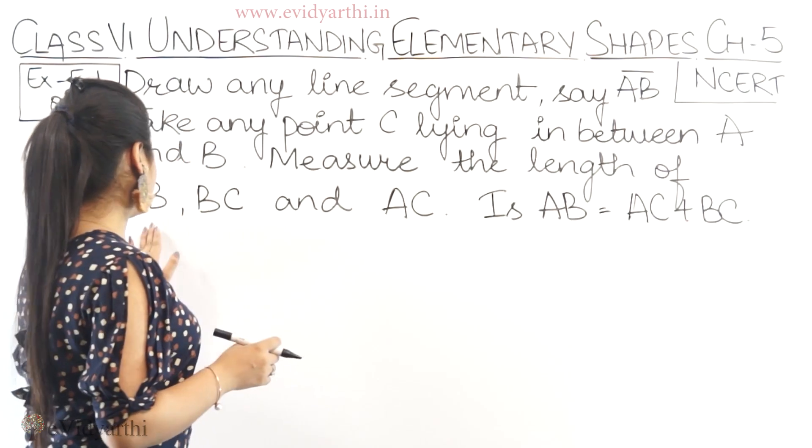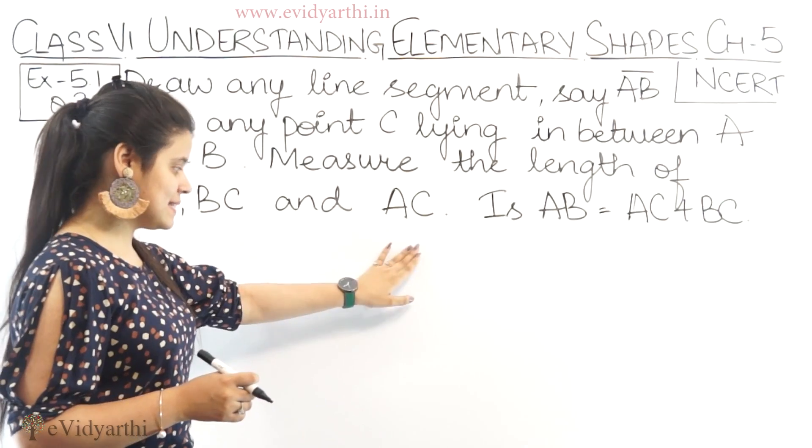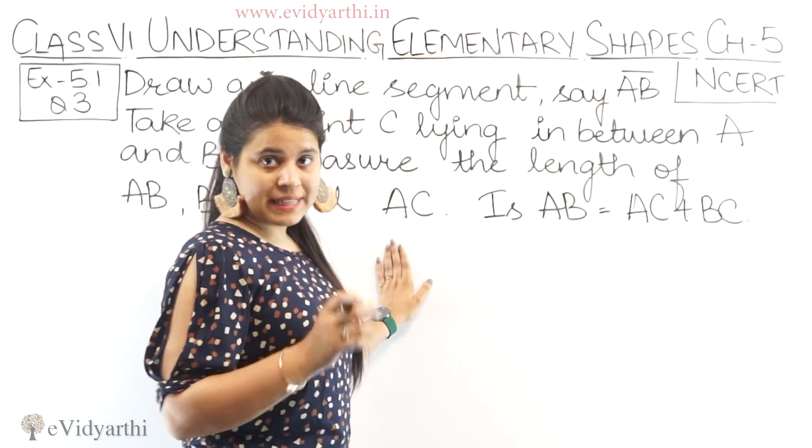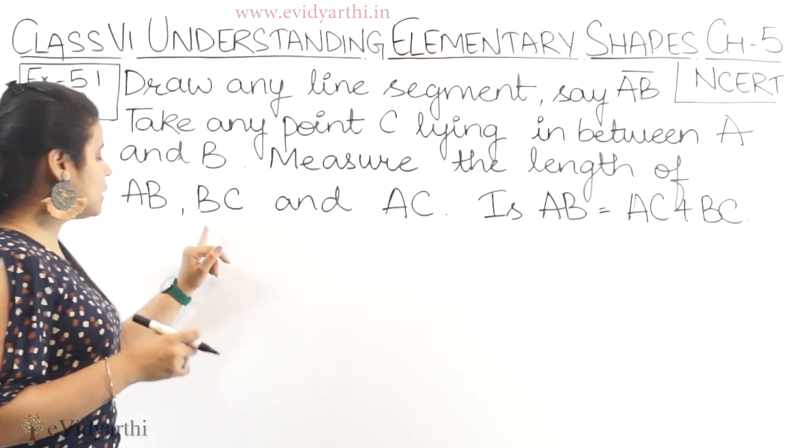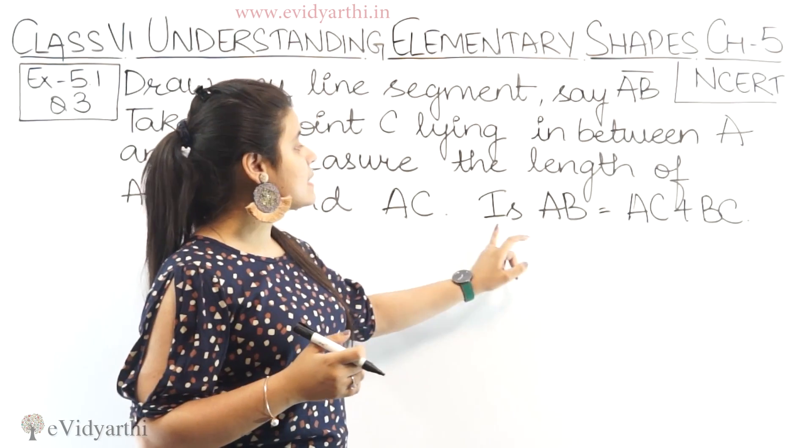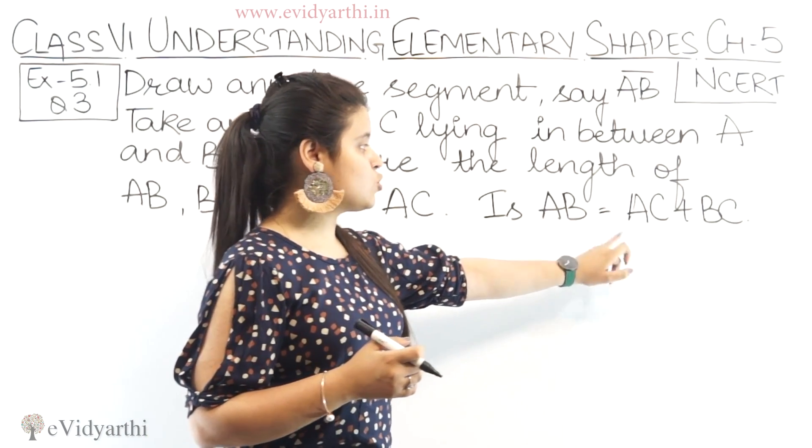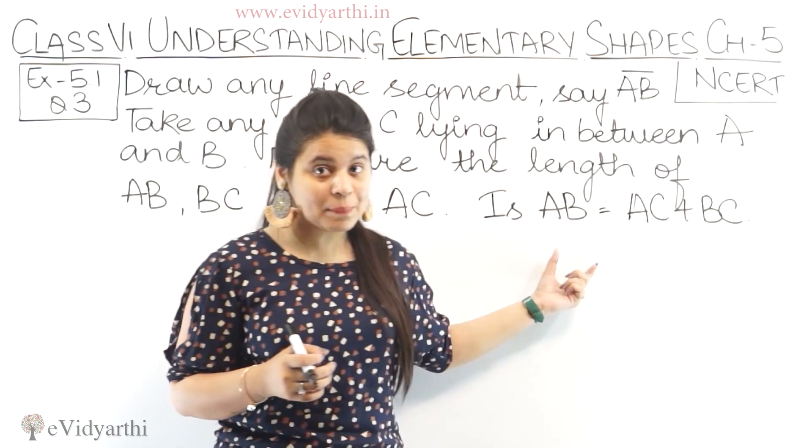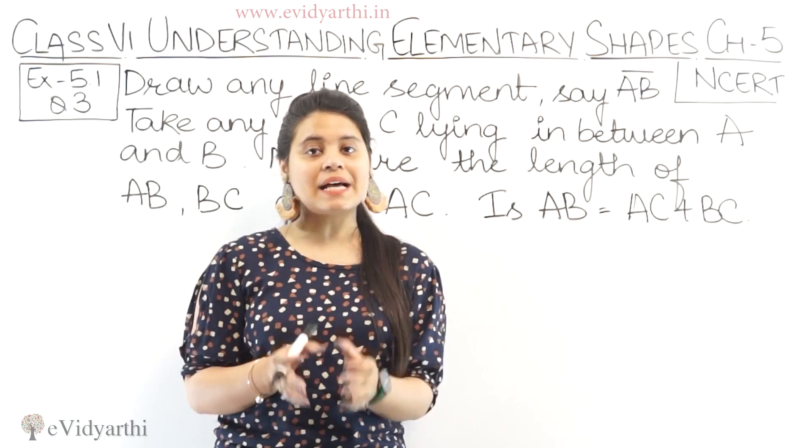Measure the length of AB, BC and AC. Then they are asking is AB equals to AC plus BC? So AB is equal to AC plus BC.